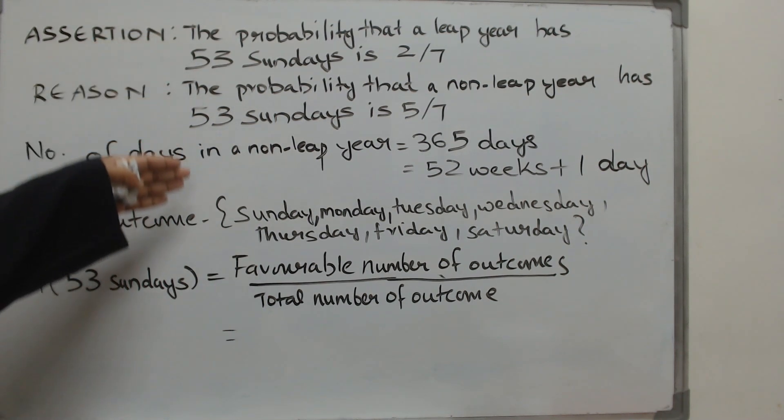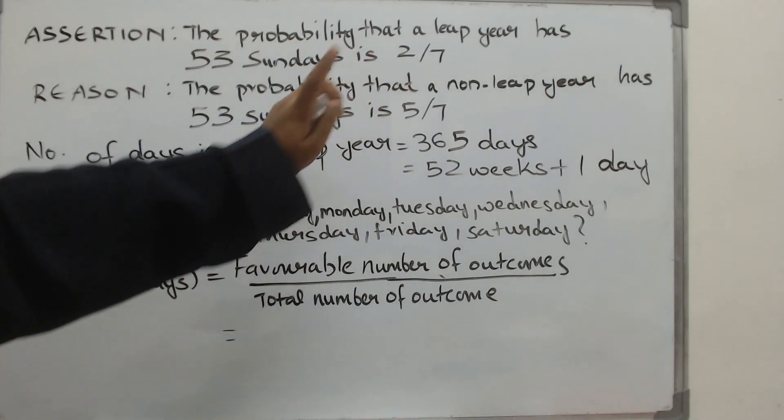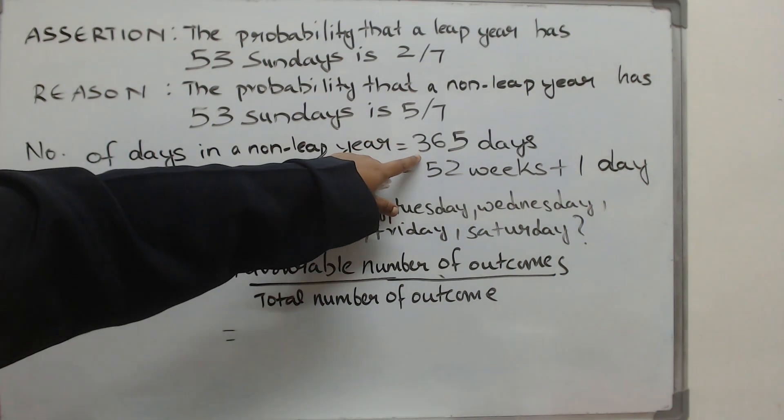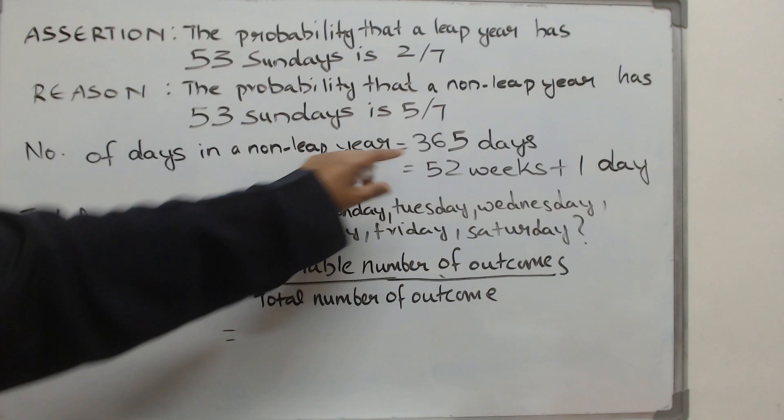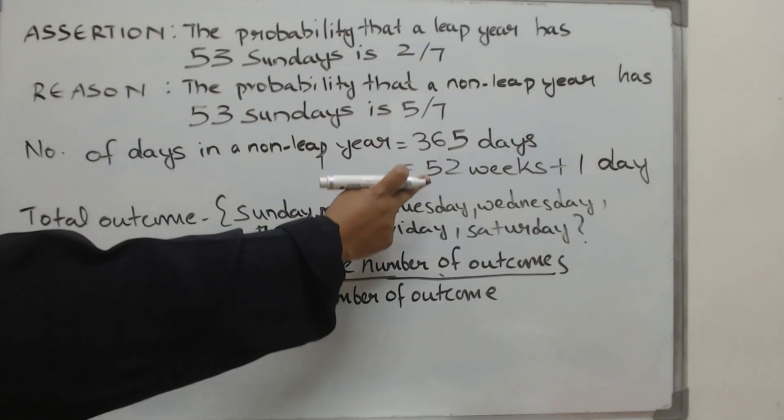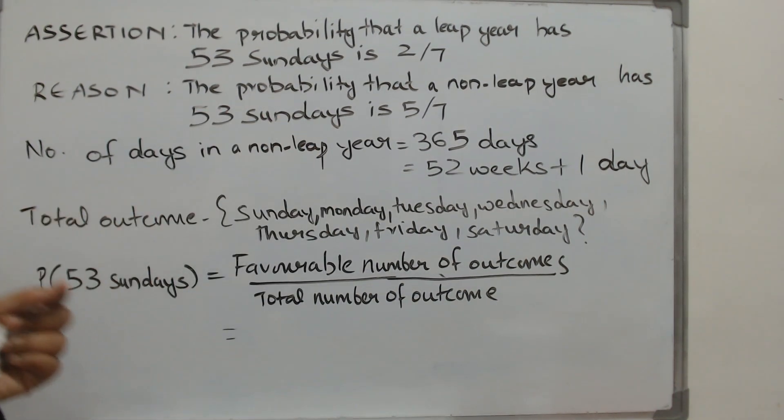Now we will proceed the same way. How many Sundays are there in a non-leap year? The number of days in a non-leap year is 365. How many weeks are there? Divide it with 7 and you will get 52 weeks and there is a remaining just one day.